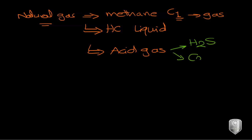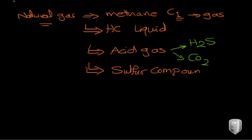Acid gases include hydrogen sulfide (H₂S) and carbon dioxide (CO₂). Natural gas during production also includes other sulfur compounds that need to be removed because they might cause corrosion, and finally it includes water.